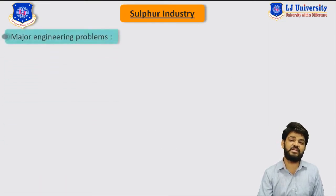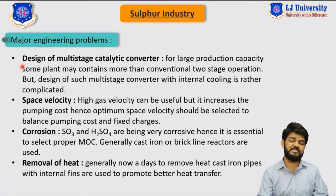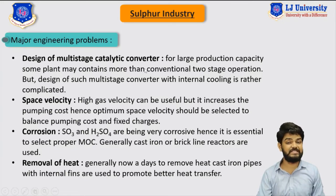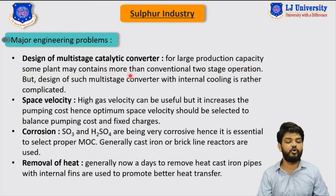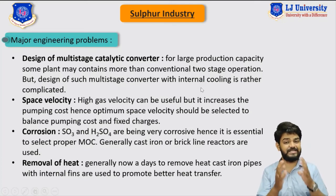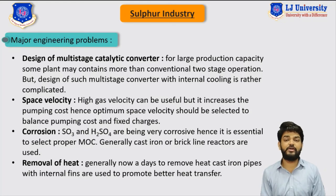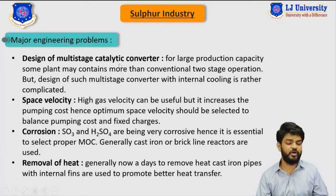Let's now move to the major engineering problems associated with the DCDA process. The first major engineering problem is the design of the multi-stage catalytic reactor. For larger production capacity, some plants may contain more than the conventional two stages. However, the design of such a multi-stage converter with internal cooling is very difficult, as we have to integrate two different stages operating at two different temperatures within a single reactor.